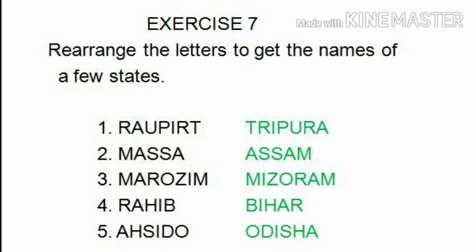Number 4: R-A-H-I-B. Arrange the letters and we will get Bihar: B-I-H-A-R. Number 5: A-H-S-I-D-O. Arrange the letters and we will get Odisha: O-D-I-S-H-A. Completed.